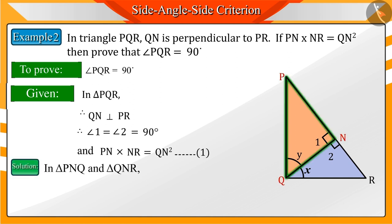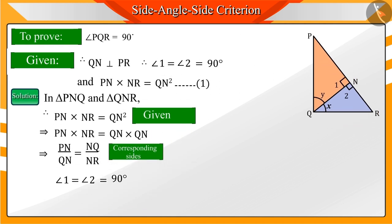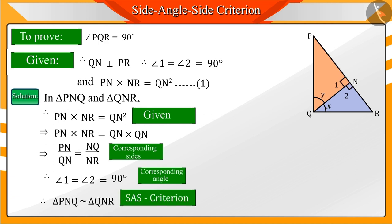And the product of PN and NR is equal to the square of QN in triangles PNQ and QNR. From equation 1, we can say that corresponding sides PN by QN and NQ by NR are proportional to each other. We know that the corresponding angles 1 and 2 are equal. Hence, by the SAS criteria, we can say that PNQ and QNR are similar to each other.